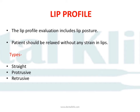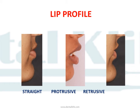Lip profile evaluation includes assessment of lip posture. The patient should be relaxed without any strain in the lips. A straight lip profile is seen in an orthognathic profile with normally inclined dentition. Protrusive lips are seen in Class II division 1 malocclusion or bimaxillary protrusion patients who have proclined anteriors; these patients are unable to form a complete lip seal, and such lips are called potentially incompetent lips. Retrusive lips are seen in patients with retrusive jaws, maxillary deficiency, or craniofacial anomalies like cleft lip and palate or syndromes such as Crouzon syndrome.